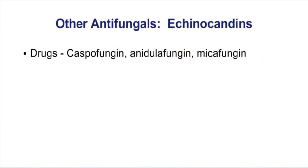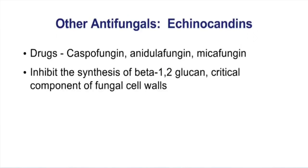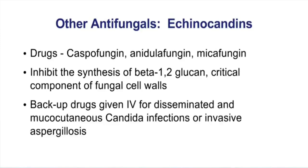The last group of antifungals are the echinocandins, which include caspofungin and other fungins. These drugs inhibit the synthesis of the cell wall component beta-1,3-glucan. By blocking production of this critical cell wall component, you kill the fungus. Today these are backup drugs given IV for disseminated and mucocutaneous candida infections or invasive aspergillosis. Watch out for liver dysfunction while on these medications.